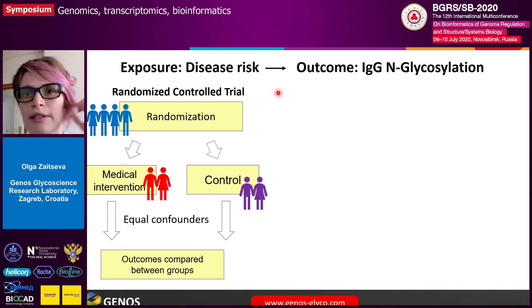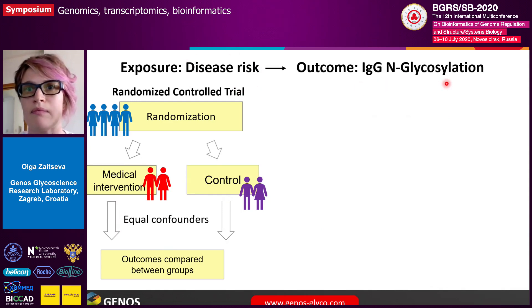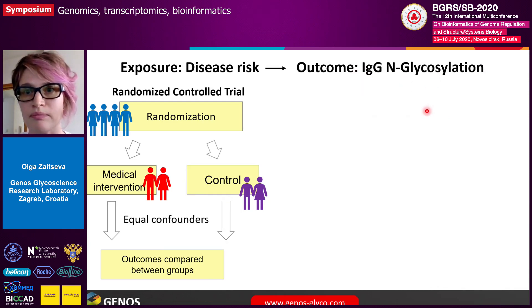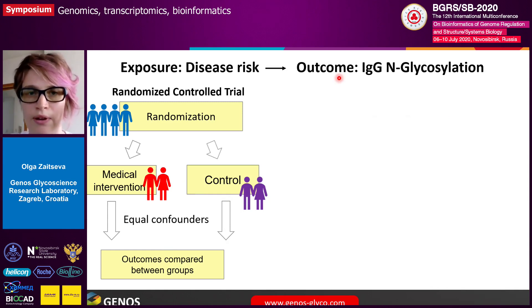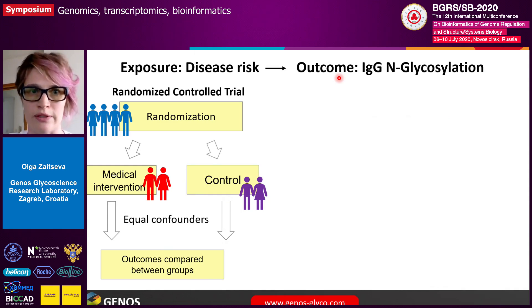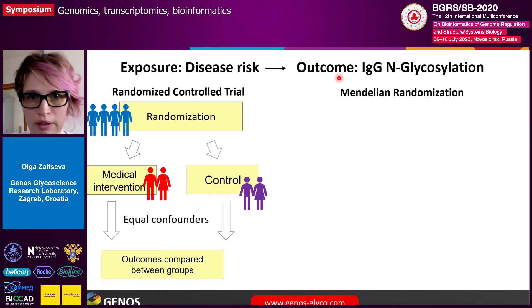However, in our case, if we would like to establish a causal link between disease risk and IgG glycosylation, it is practically impossible to conduct a randomized control trial. Luckily, there exists an excellent in silico method which uses information about how different mutations influence two complex traits to establish this causal link. This method is called Mendelian randomization.